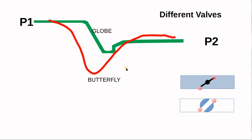Now consider one liquid with different valve types. A butterfly or ball valve concentrates differential pressure losses in only one or two places, creating a greater pressure depth. A globe valve distributes the loss across many locations with smaller individual drops. So a butterfly or ball valve may cause cavitation with a given liquid, while a globe valve with the same liquid may not cavitate.